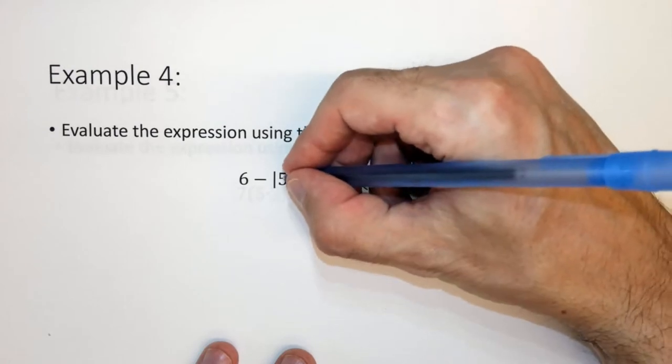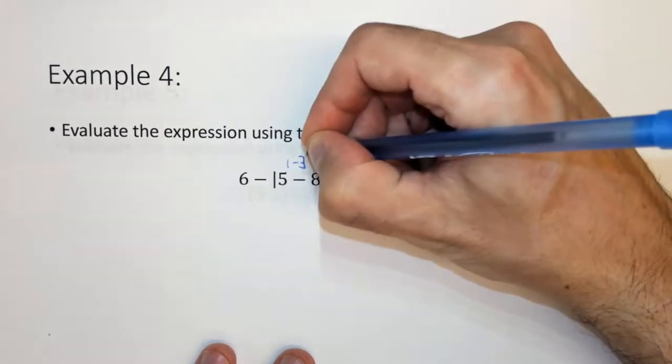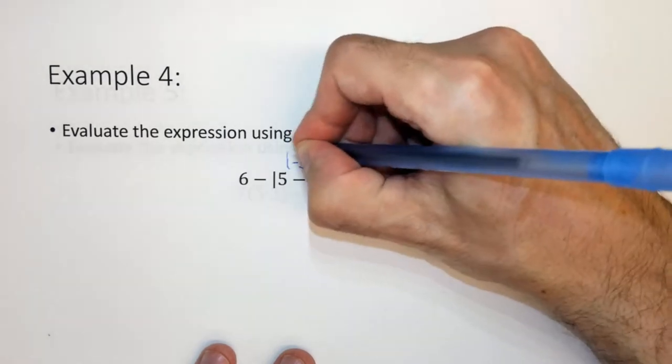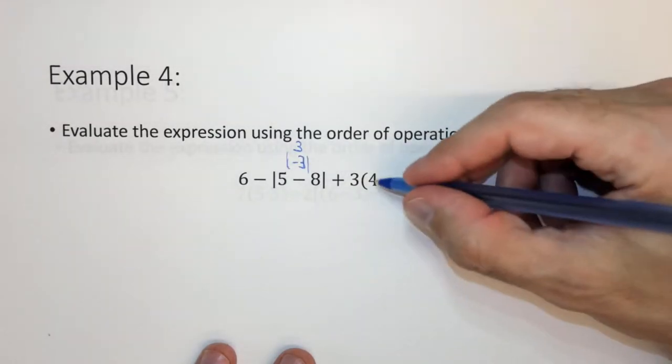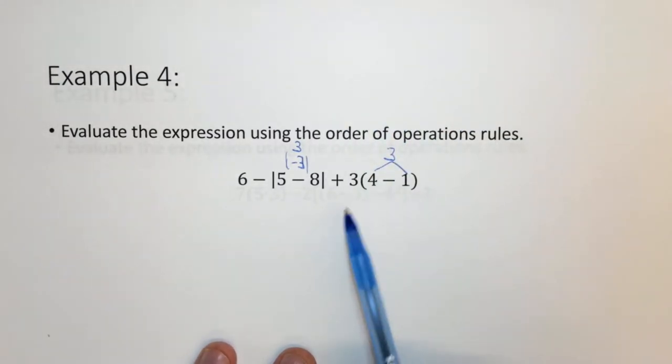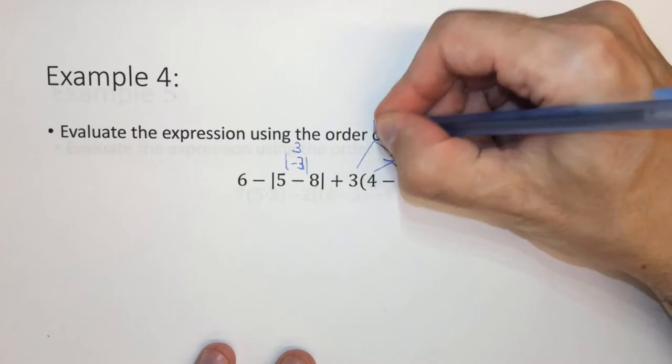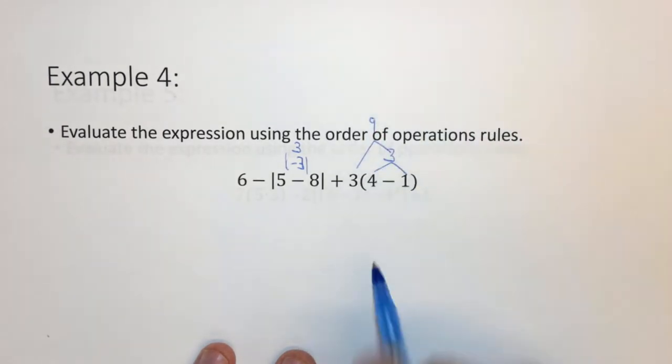So in this case, we want to do this subtraction and this subtraction first. So in this case, we have 5 minus 8, which is minus 3, but we want the absolute value, which is 3. And in this case, we want to do 4 minus 1, which is 3. Now we want to take that 4 minus 1, and we have multiply, which is 3 times 3, which is 9.